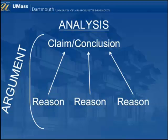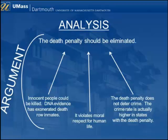For example, imagine a writer has made a claim that the death penalty should be eliminated. The writer may have provided several reasons: he may have noted that innocent people could be killed, as demonstrated by the recent exonerations of death row inmates using DNA evidence. The writer might also argue that it violates moral respect for human life. And he might provide statistics showing that the crime rate is actually higher in states with the death penalty, and then infer that the death penalty does not deter crime. Analyzing arguments well takes study and practice, because often speakers or writers don't do a good job of showing us the structure of their arguments. For instance, they may leave the conclusion implied rather than explicitly stated, or spend four paragraphs on one supporting reason but then squeeze three reasons into one sentence.